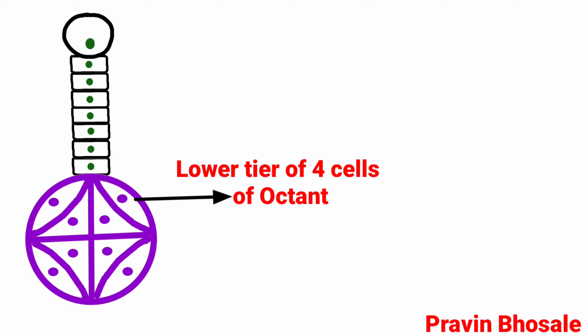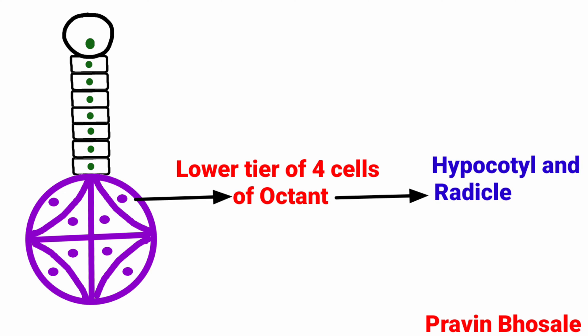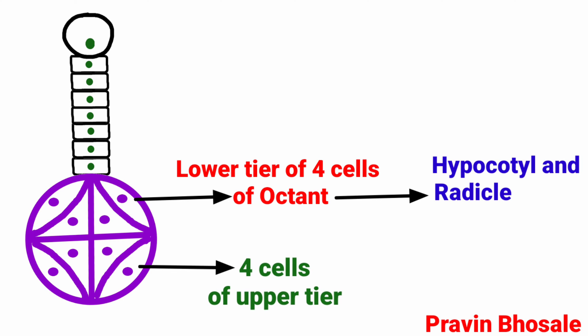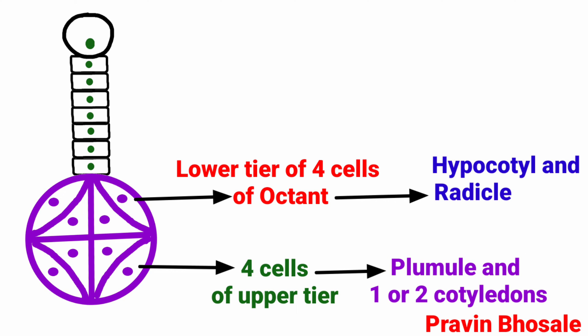In this octant, the lower tier of four cells gives rise to the hypocotyl and radicle. The upper tier of four cells forms the plumule and one or two cotyledons, depending on whether it is monocot or dicot.